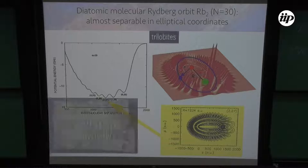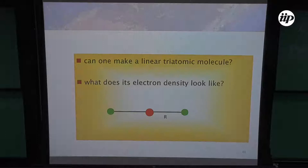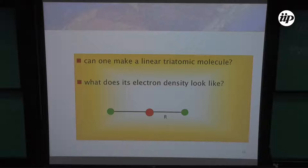That's why these wave functions are called trilobites — these ancient animals look a little bit similar. Now, can we make chemistry with that? This is a diatomic system — can we make a triatomic, a trimer, by adding another ground state atom? What should the electron density look like for such a system?